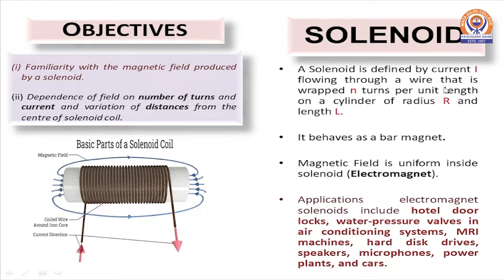Basically solenoid is defined by current I flowing through the wire that is wrapped n turns per unit length on a cylinder of radius R. When current is passed through this conducting insulated copper wire it behaves as a bar magnet and magnetic field produced is uniform inside the solenoid and it behaves as an electromagnet.